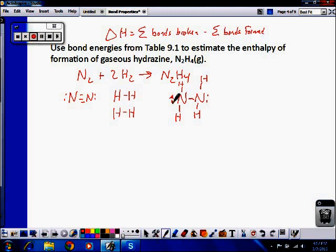So let's see, what bonds do we break? We break one nitrogen triple bond, and that is 946 kilojoules of energy. So that bond is broken, plus we break two hydrogen bonds. They are 436 each, multiplied by 2.